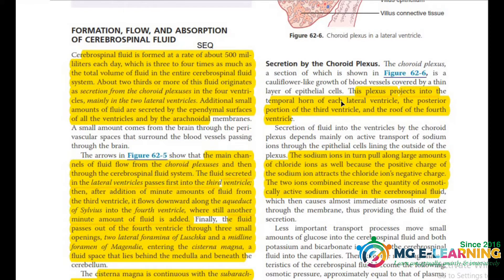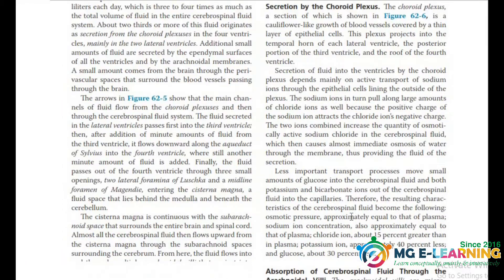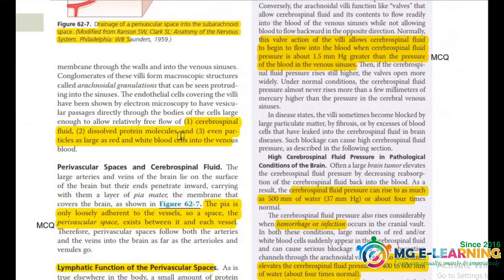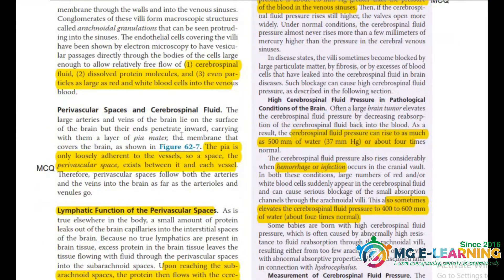Now is the secretion by the choroid plexus, which is also important for your SCQ. Next is the drainage of perivascular space — this space and structure are important for your concepts and are asked in MCQs.